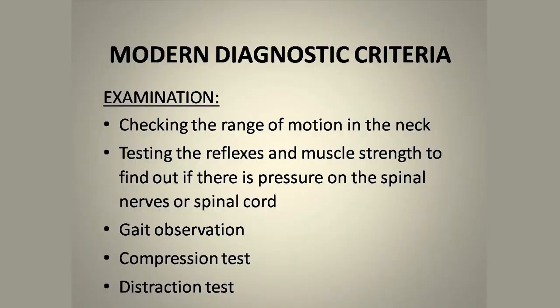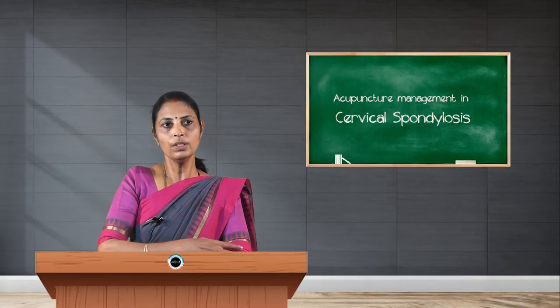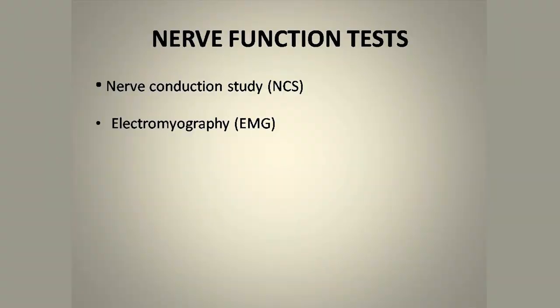Differential diagnosis is very important because cervical spondylosis can mimic other conditions. We need to observe the gait and perform the compression test, which includes the vertebral compression test — also known as the foramen compression test — and the disc traction test; together these are considered the Spurling test. Apart from clinical tests, laboratory investigations like nerve conduction study and electromyography are needed to find out if a specific nerve root is involved.